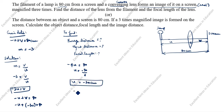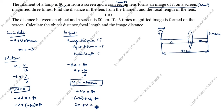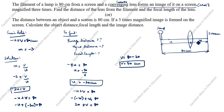Now substituting U equals minus 20 back into minus U plus V equals 80: minus of minus 20 plus V equals 80, so plus 20 plus V equals 80, giving V equals 60 centimeters — which is positive. So U equals 20 cm and V equals 60 cm.